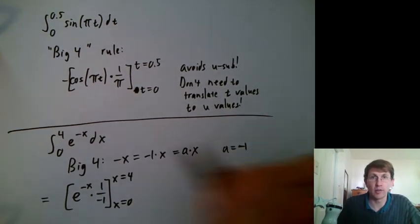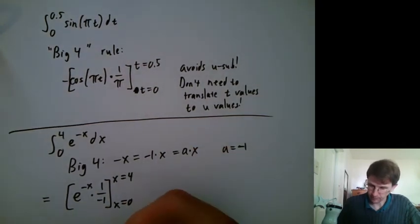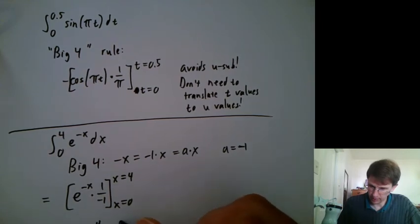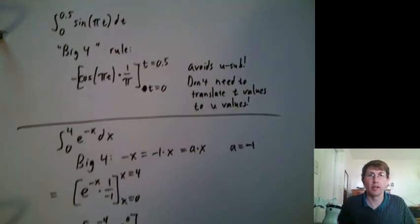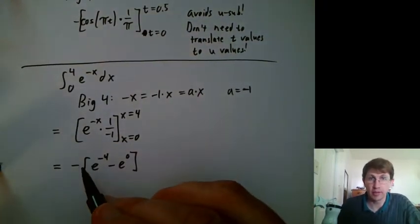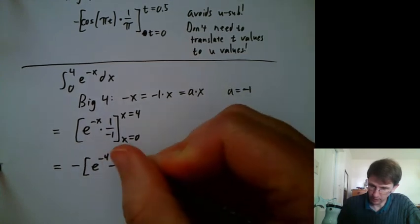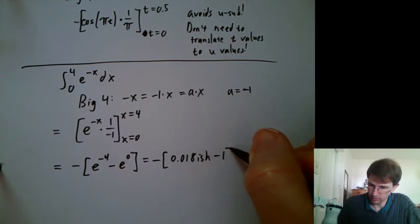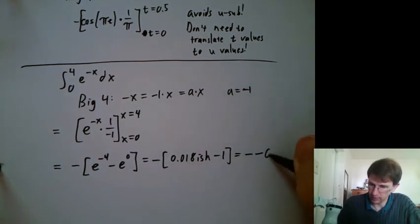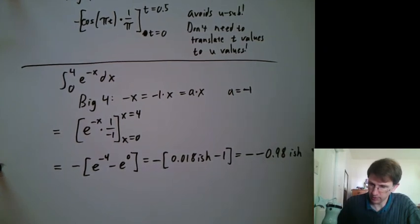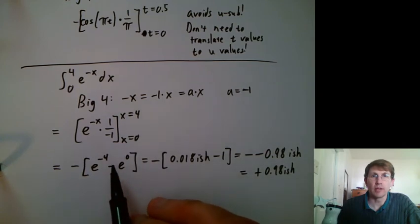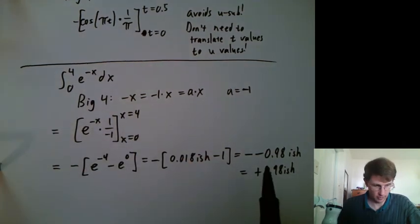Again, I didn't have to translate between t or x and u. I can pull the minus outside, and I get e to the negative 4 minus e to the 0, which I got before. It's looking bad because we got that negative there, but e to the minus 4 is smaller than e to the 0. So we get negative, negative 0.98-ish. So we get positive 0.98-ish. So again, the overall answer was positive. We knew that, and we did end up with a positive.